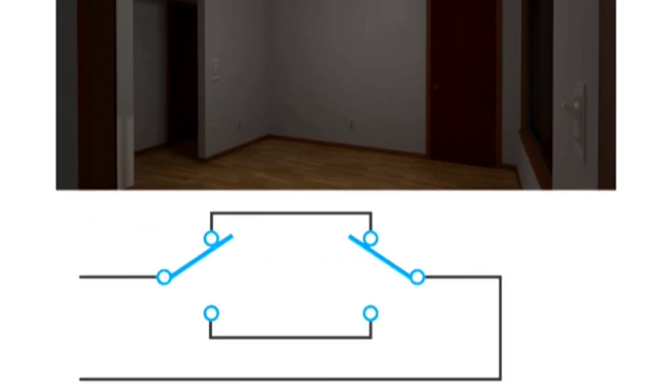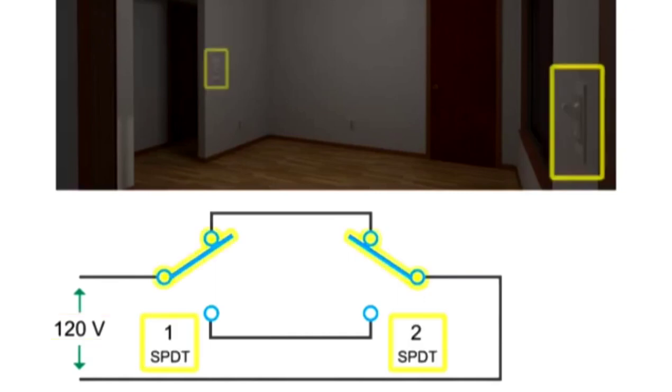In this diagram depicting the operational components of a three-way switch, we have a typical 120-volt source and two single-pole double-throw switches controlling a load, or in this case, a light bulb.